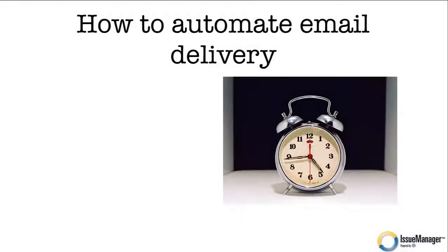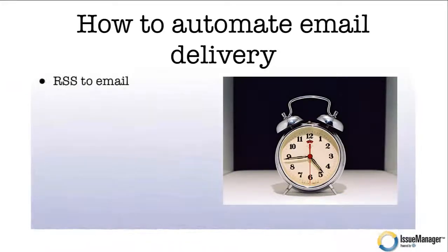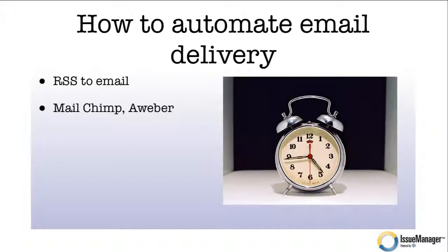Now let's talk about how to automate email delivery — this is every marketer's dream. The emails just get pushed out automatically, and this is how we do it today. It uses a technology called RSS to email. You don't have to know what it is or even worry about it, but that is the official technology. The two best providers we like are MailChimp and AWeber — they both work great.